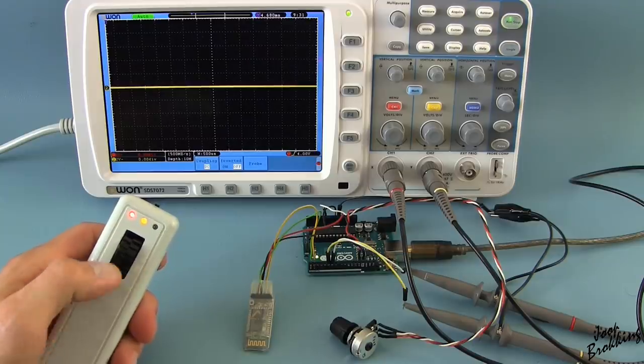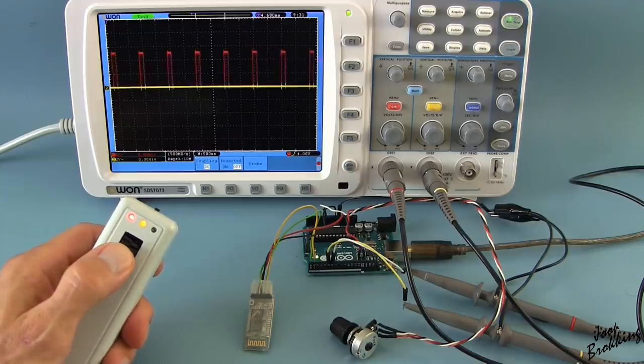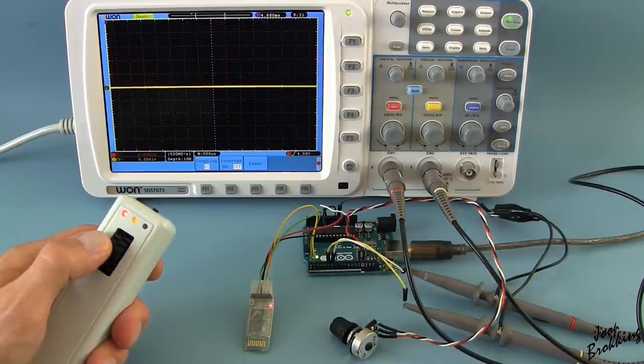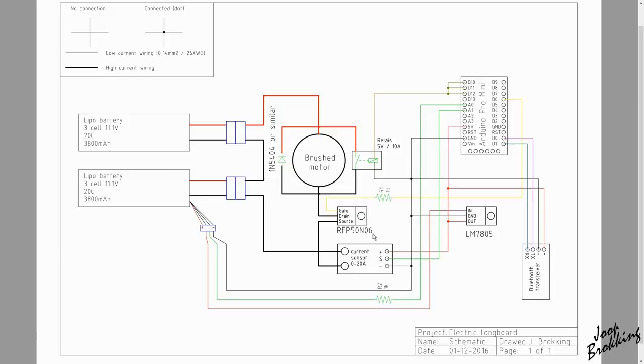In the first video, I explained that I'm using the pulse width modulator of the Arduino to drive the motor. As you can see here on the schematic, a MOSFET is used to supply the power that is needed for the motor.